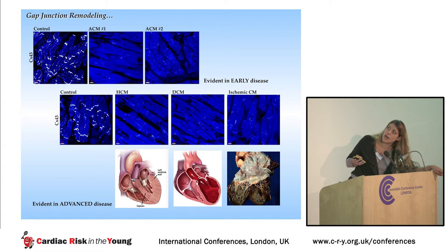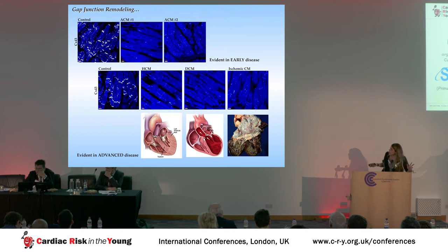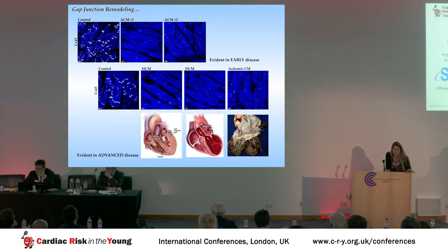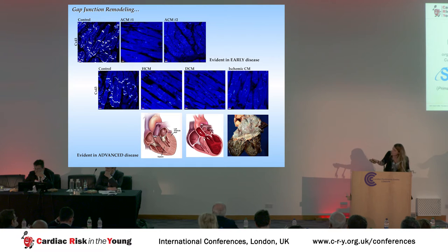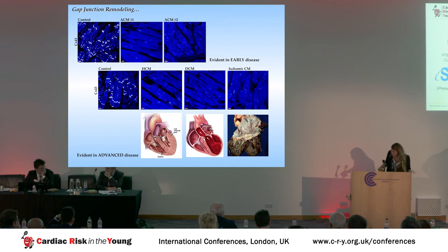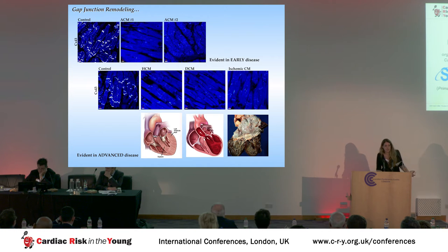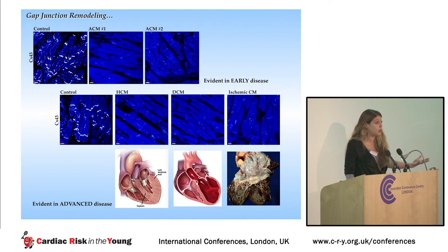The second thing we observed was a similar reduction in signal at the junctions for connexin-43, the major gap junction protein in the heart ventricles. This gap junction remodeling is by no means specific to this disease - it has been shown in pretty much every type of heart disease examined. There is, however, one fundamental difference. In other cardiomyopathies like hypertrophic or dilated, this gap junction remodeling happens late in the course of the disease, after the heart has already been structurally remodeled. But in ARVC, these changes happen early. You can have a child even before it manifests the disease phenotype, look at the myocardium, and see that connexin-43 is missing from the junctions even before the person is actually sick.